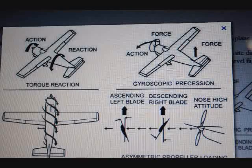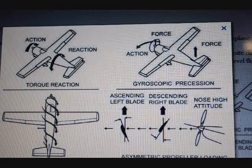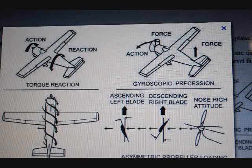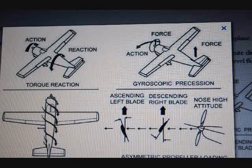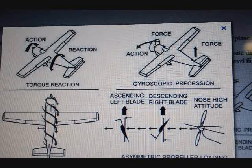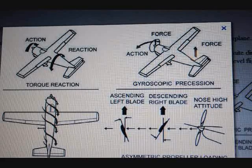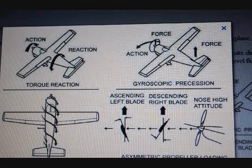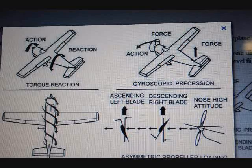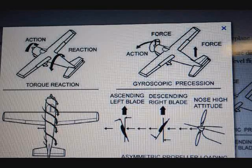How do we stop left-turning tendencies? Right rudder. You might hear your flight instructor say, "right rudder, right rudder" when you're tracking down the runway. It's because you're veering off the centerline going towards the grass and he wants to stay on the centerline. Center line is your friend — do whatever you gotta do to stay on it. Right rudder.